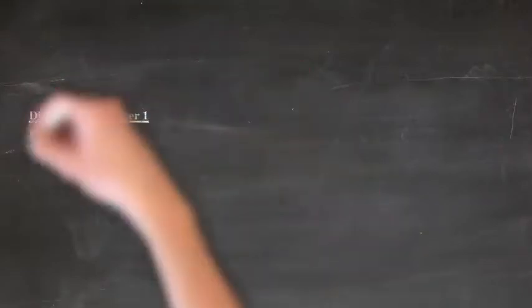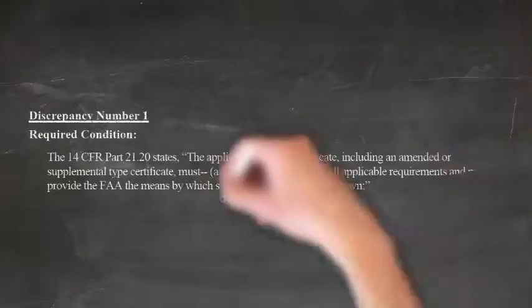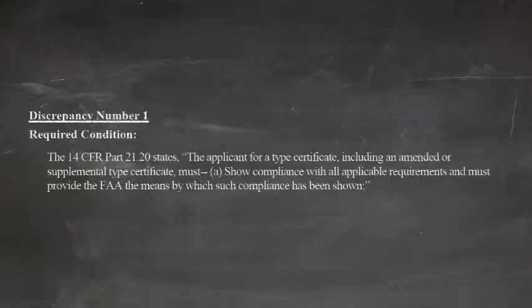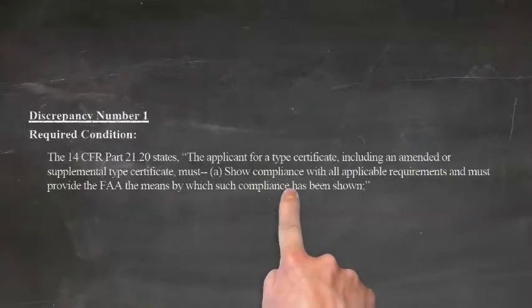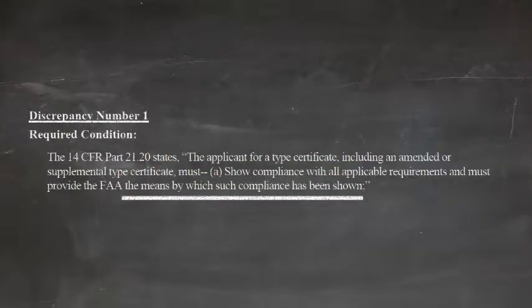In the first discrepancy, the required condition stems from 14 CFR 21.20, where the applicant must show compliance with all applicable requirements and provide the FAA the means by which compliance is shown — effectively meaning that the FAA should be able to follow the trail from the compliance checklist through the substantiation reports and into the 8100-9s.